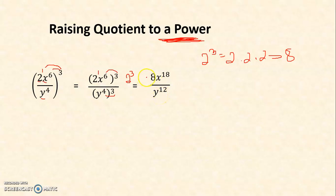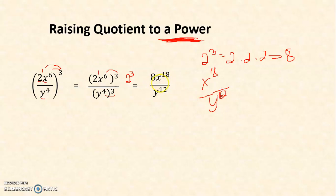This is now the final answer. You might ask: can we simplify x raised to 18 over y raised to 12? No, because they have different bases — here is x and here is y. So we cannot simplify it further. Therefore, this is the final answer.